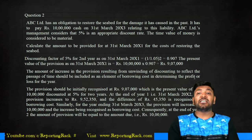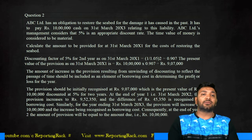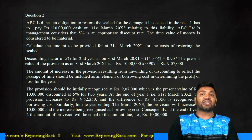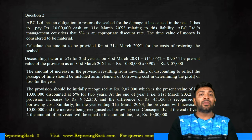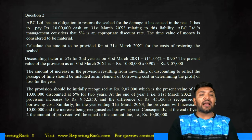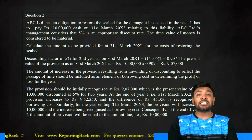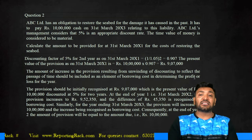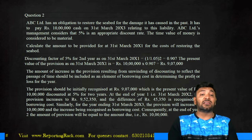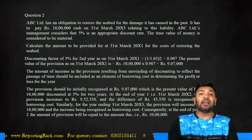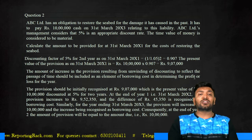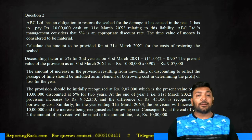Question number two: ABC has an obligation to restore the seabed for the damage it caused in the past. It has to pay 10 lakh cash on 31st March 2013 relating to this liability. ABC management considers 5% as the appropriate discount rate, and the time value of money is considered to be material. Calculate the amount to be provided on 31st March for the cost of restoring the seabed.